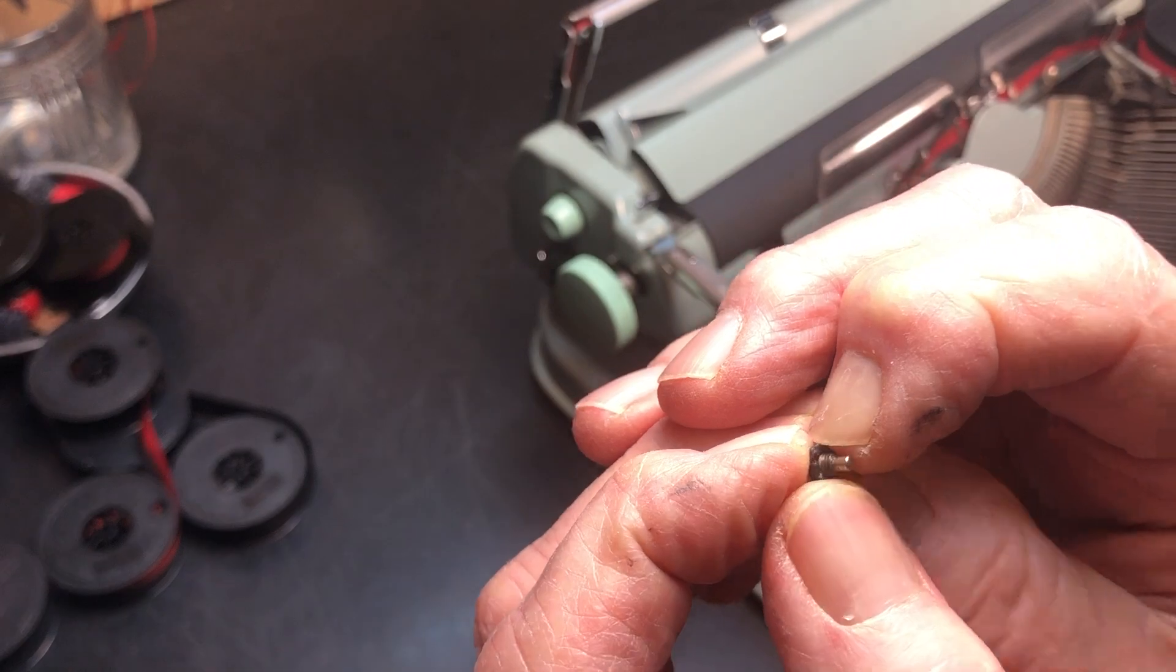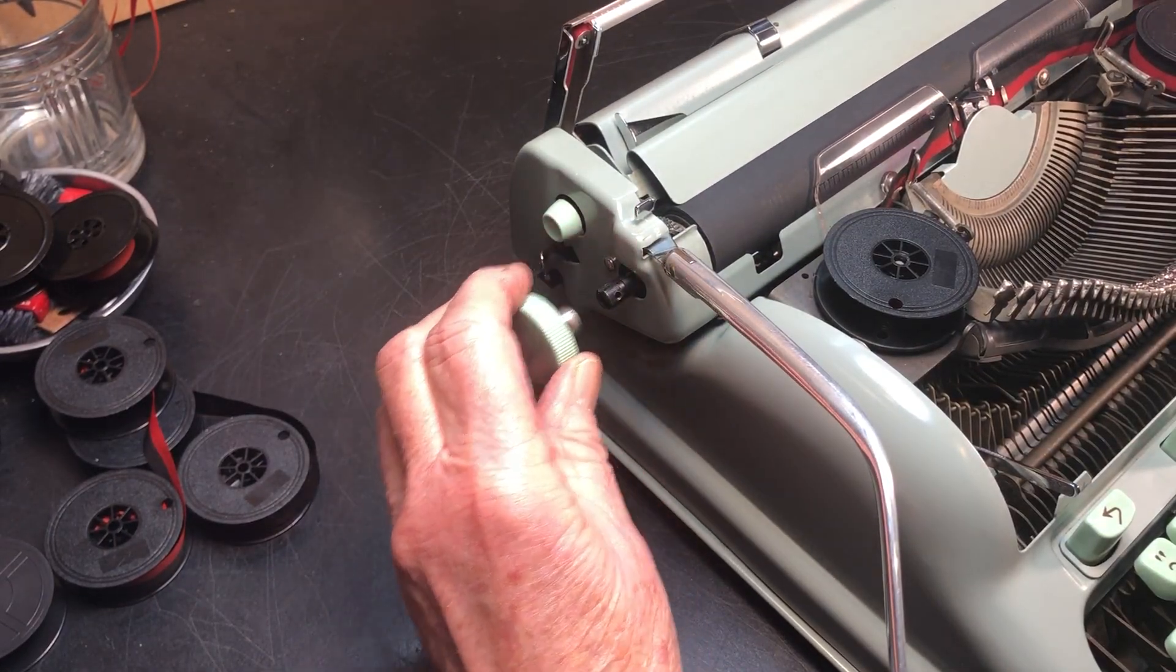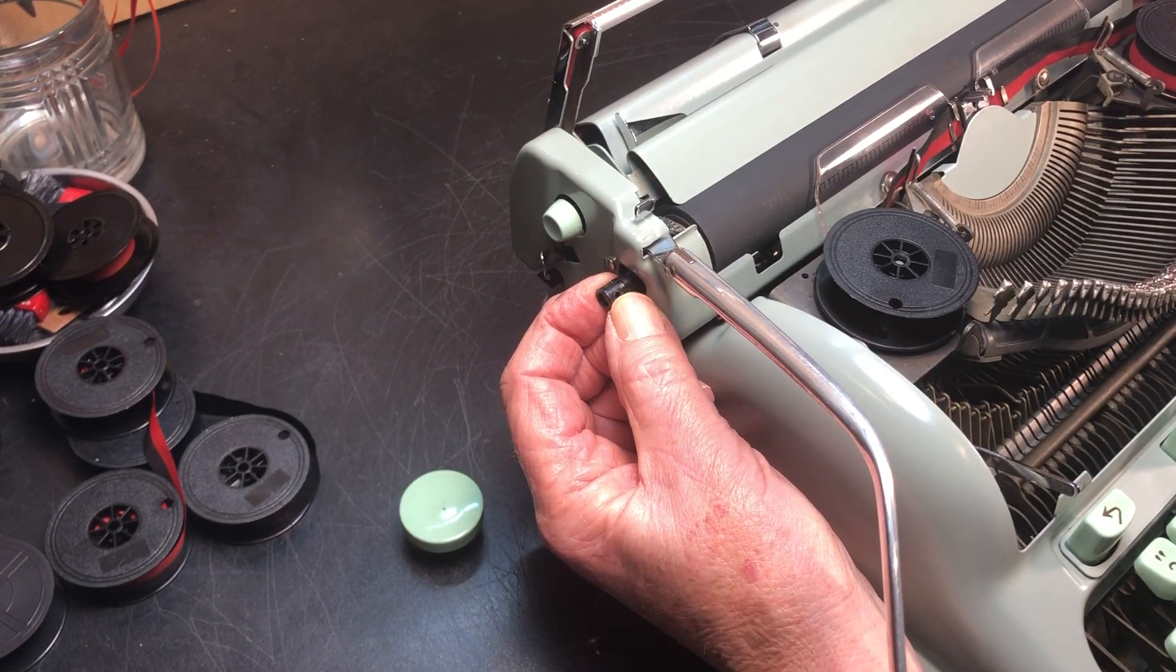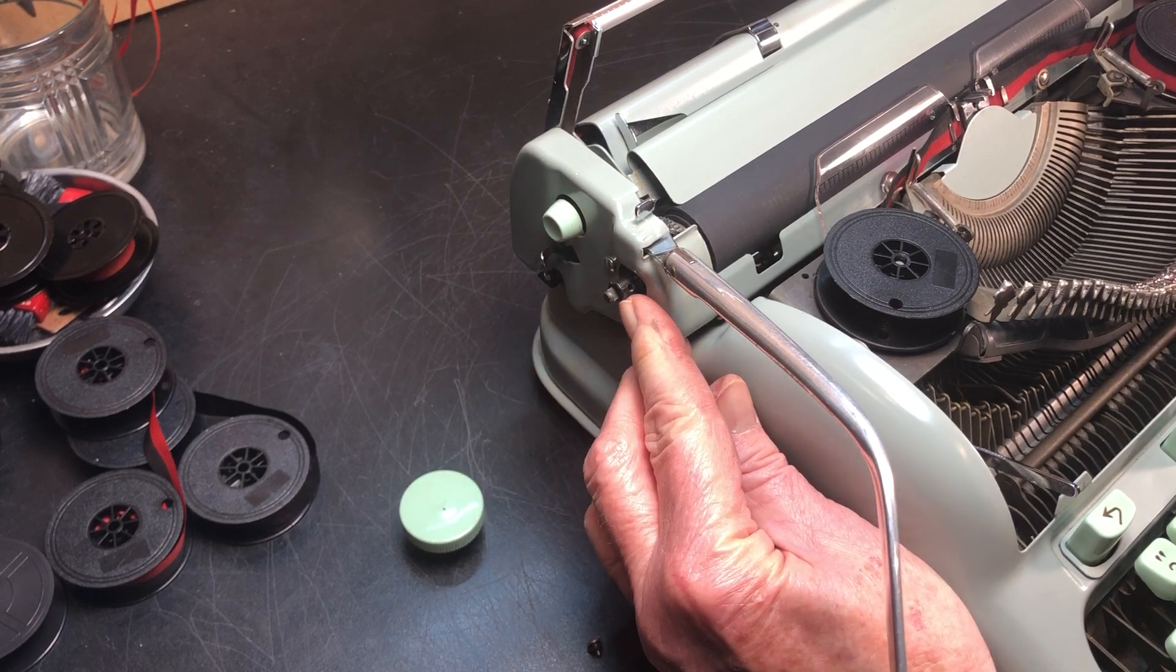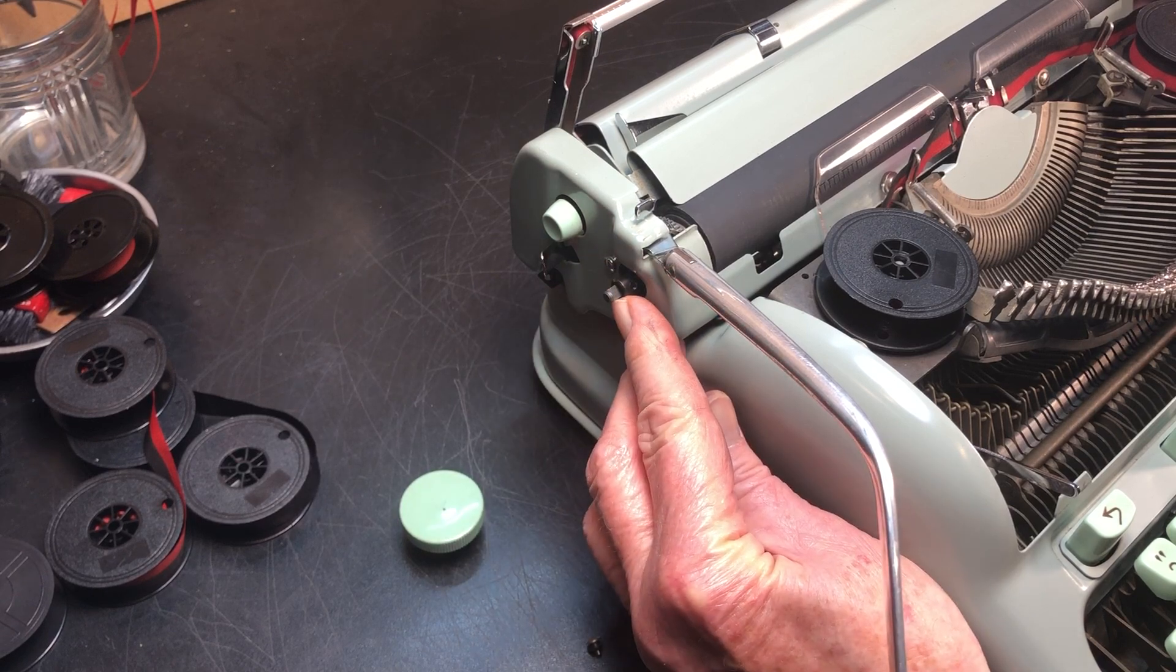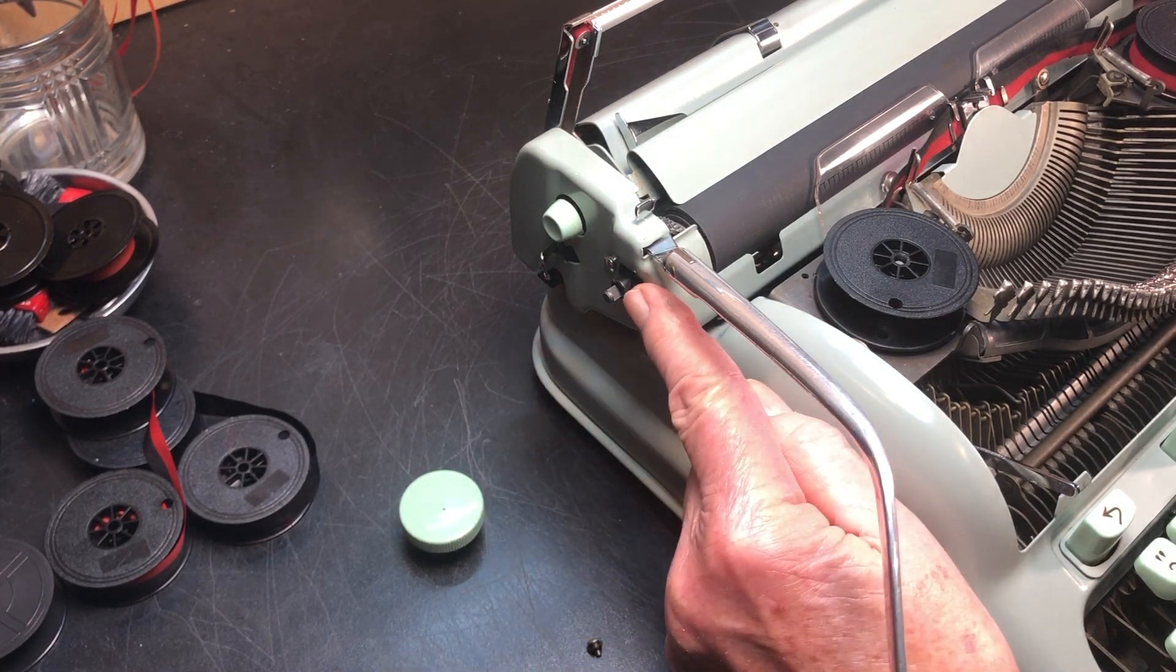The reason for that is that it has to go through here and into a notch. There is a notch in the platen shaft. I don't know if you can see this notch right here. That nub goes into that notch.